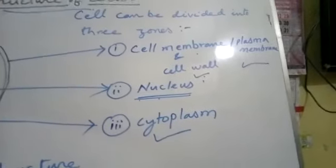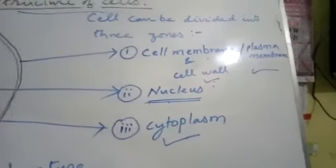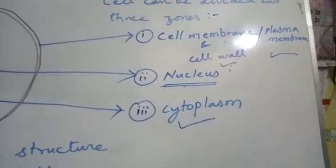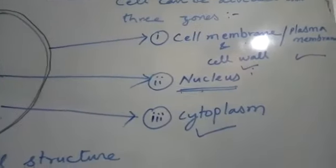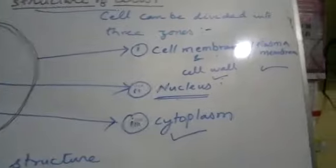The third zone is the nucleus, which is surrounded by the nuclear membrane. So the three zones of a cell are the cell membrane, the cytoplasm in the middle, and the nucleus.